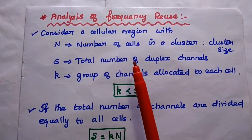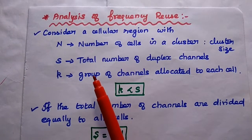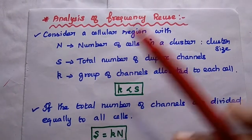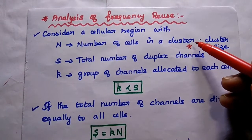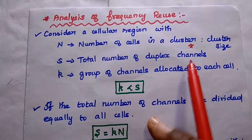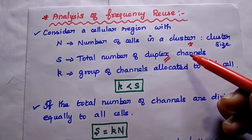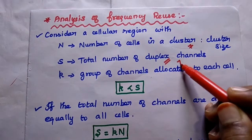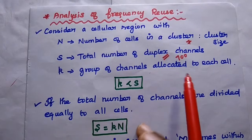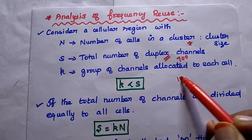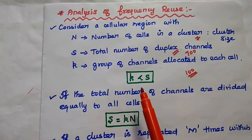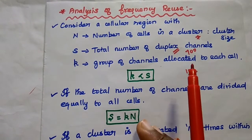To analyze the frequency reuse concept in detail, we consider a cellular region with a number of cells in a cluster — that is the cluster size, represented by capital N. In the previous example, the cluster size is 7 because 7 cells cover the complete set of frequencies. The total number of duplex channels — duplex means it supports two-way communication, transmission as well as reception — is 700 frequency channels. Here K represents the group of channels allocated to each cell, which is 100 channels per cell. We can ensure that K is always less than the total number of channels — so 100 is always less than 700.